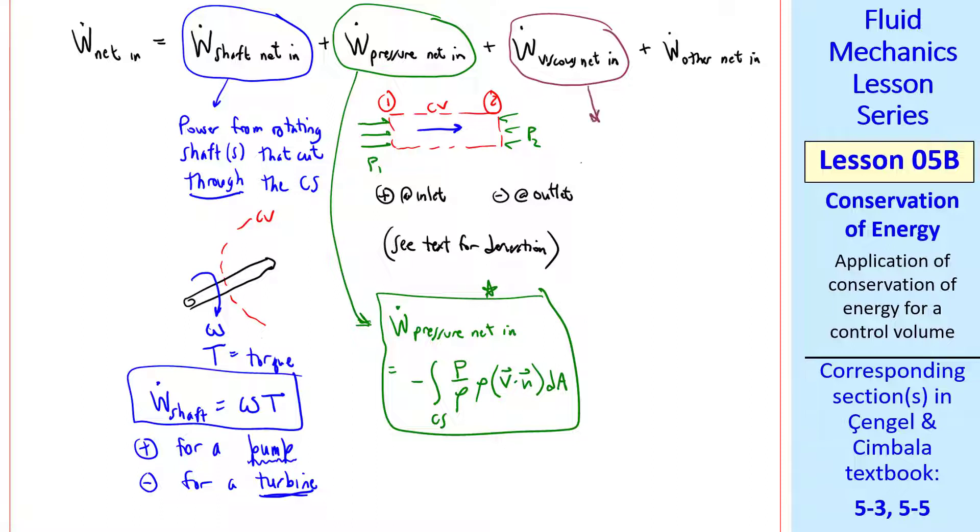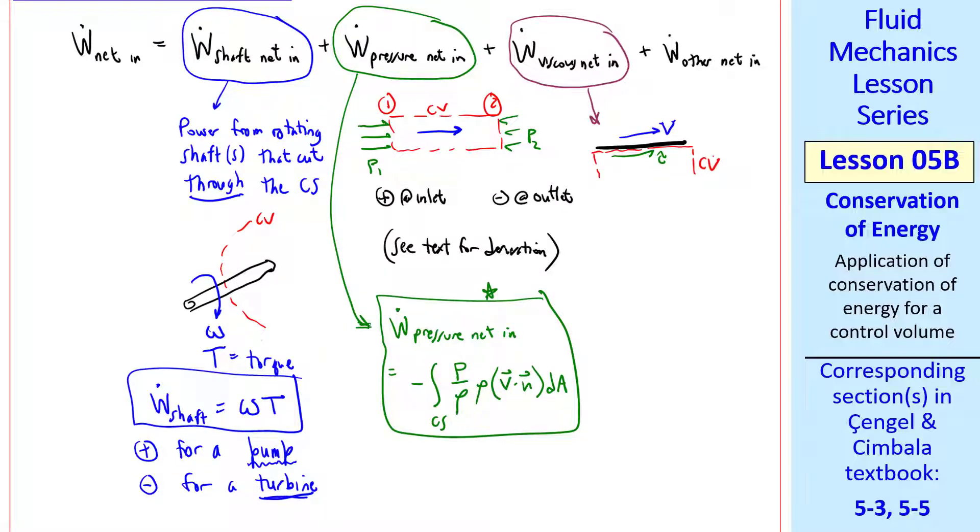Now consider this term. What do we mean by viscous power? If you have a moving wall, it will exert a shear stress τ on the fluid. And if our control volume butts against that moving wall, you will have a viscous power term. Viscosity is adding work or power to the control volume. But as we'll see, in most of the problems in this course, this term is zero. By wise choice of control volumes, we usually pick our control volume so that it does not butt up against moving walls, and then this term goes to zero.